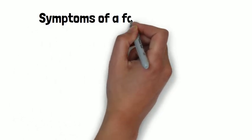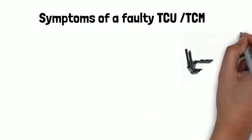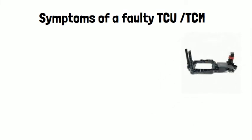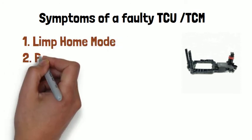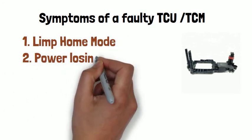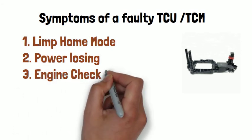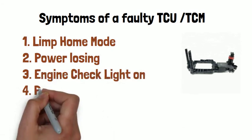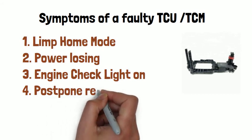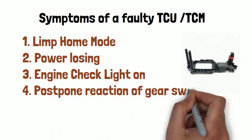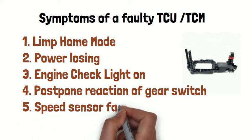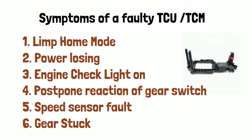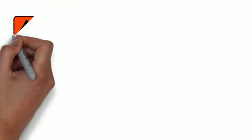Here are the common symptoms that occur when the 722.8 transmission control unit goes wrong: number one, limp home mode; number two, power loss; number three, engine check light on; number four, delayed reaction of gear shift; number five, speed sensor fault; number six, gear stuck.